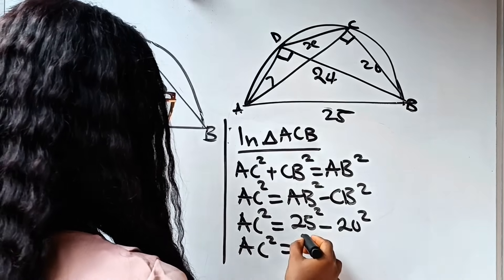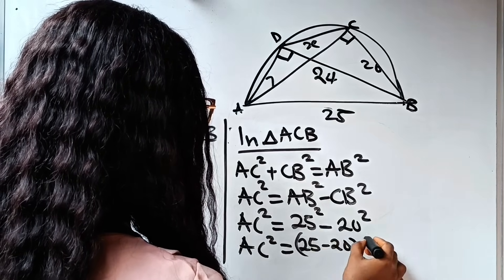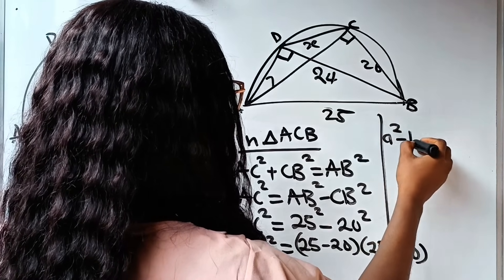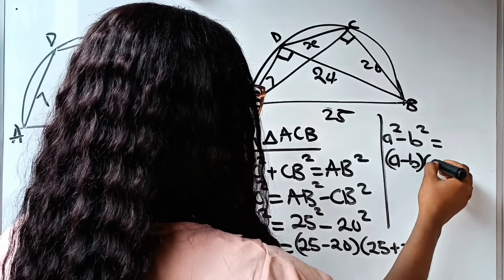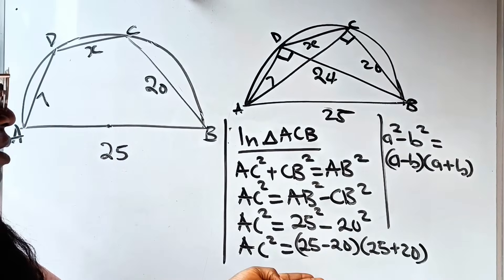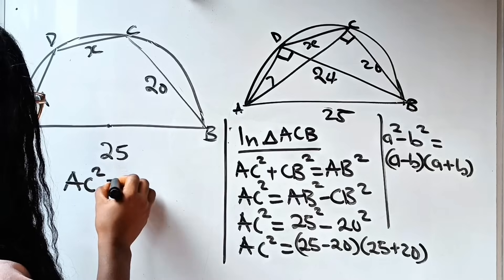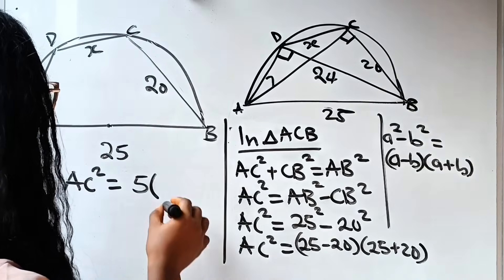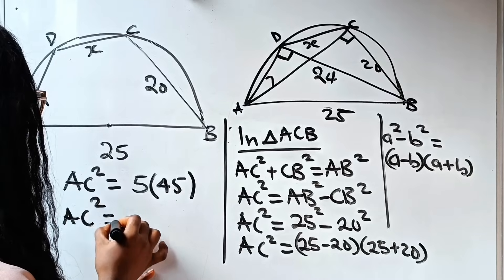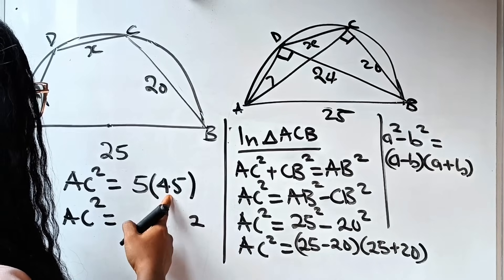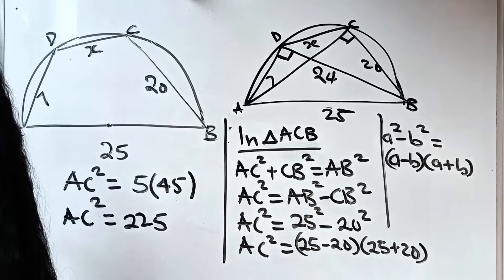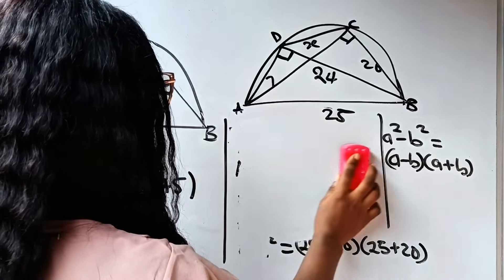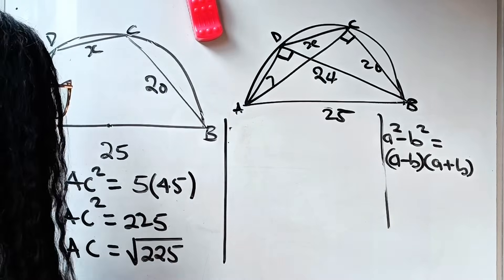AC² = 25² − 20². Using the difference of squares identity (a² − b² = (a−b)(a+b)): 25 − 20 = 5, and 25 + 20 = 45, so AC² = 5 × 45 = 225. Therefore AC = √225.